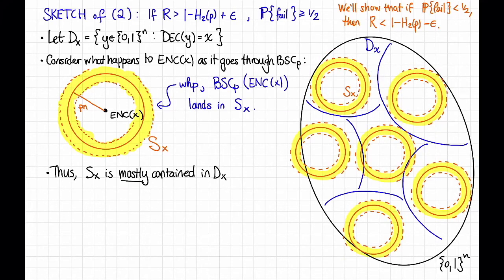There's some wiggle room here in the mostly, the probability of failure can be as high as one half, so maybe by mostly I mean like half of it has to be, but a solid chunk has to be contained in D_x. And this is true for any x. So maybe the picture looks something like this. Each one of these regions, D_x, has its own little annulus living inside it, or overlapping substantially with it.